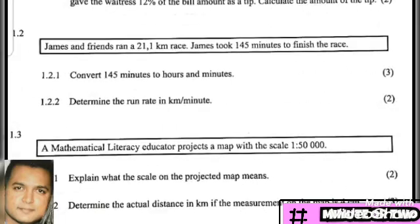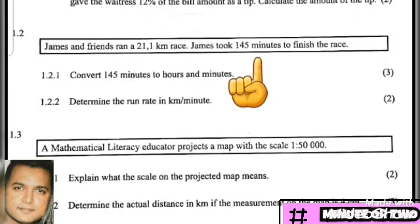In the next section, 1.2, we are given information about James and his friends who ran a 21.1 kilometer race. James took 145 minutes to finish the race. From this information, the distance given is 21.1 kilometers and the time given is 145 minutes.